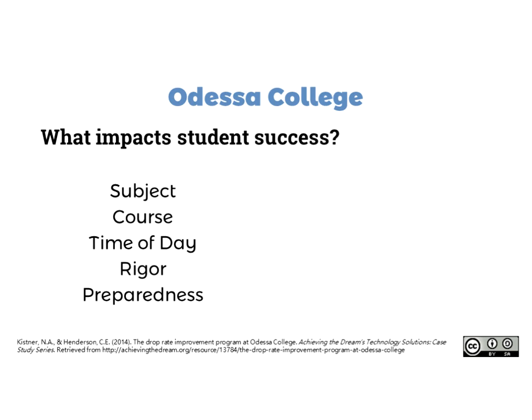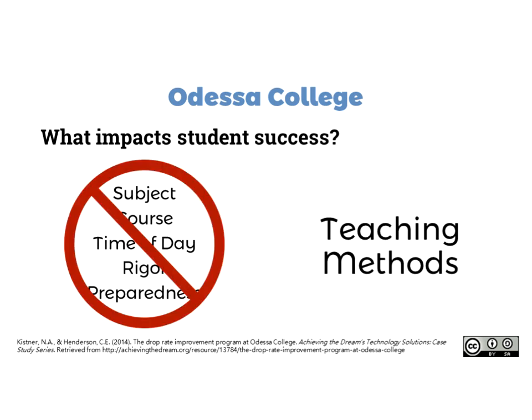They looked at rigor, and then they examined student preparedness — previous high school grades and placement assessment scores. What they found was a little bit shocking, both to Don and to those of us listening: none of those things showed a significant correlation to students staying in a course and successfully completing it at the course level.